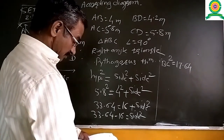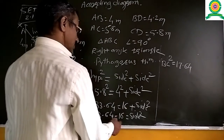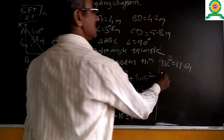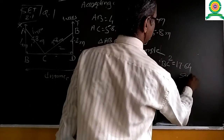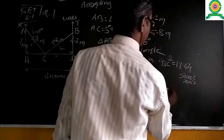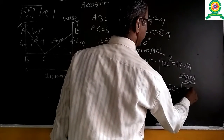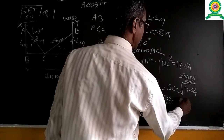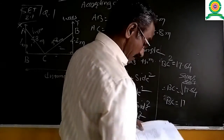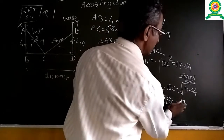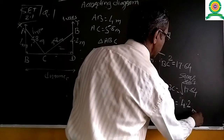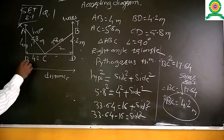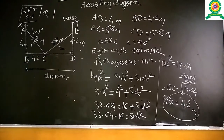The subtraction gives 33.64 − 16.00 = 17.64. So BC² = 17.64. By taking the square root, BC = √17.64 = 4.2 metres. So the first ladder rests 4.2m along the horizontal.